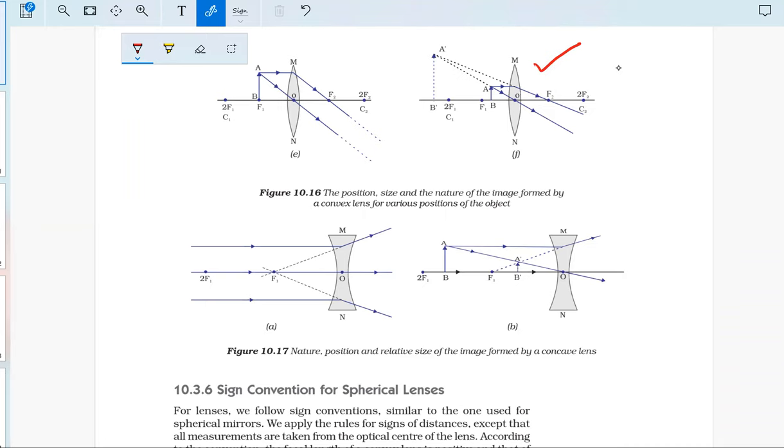As the candle is moved away from the lens, the size of the image goes on decreasing. The image will be of point size.